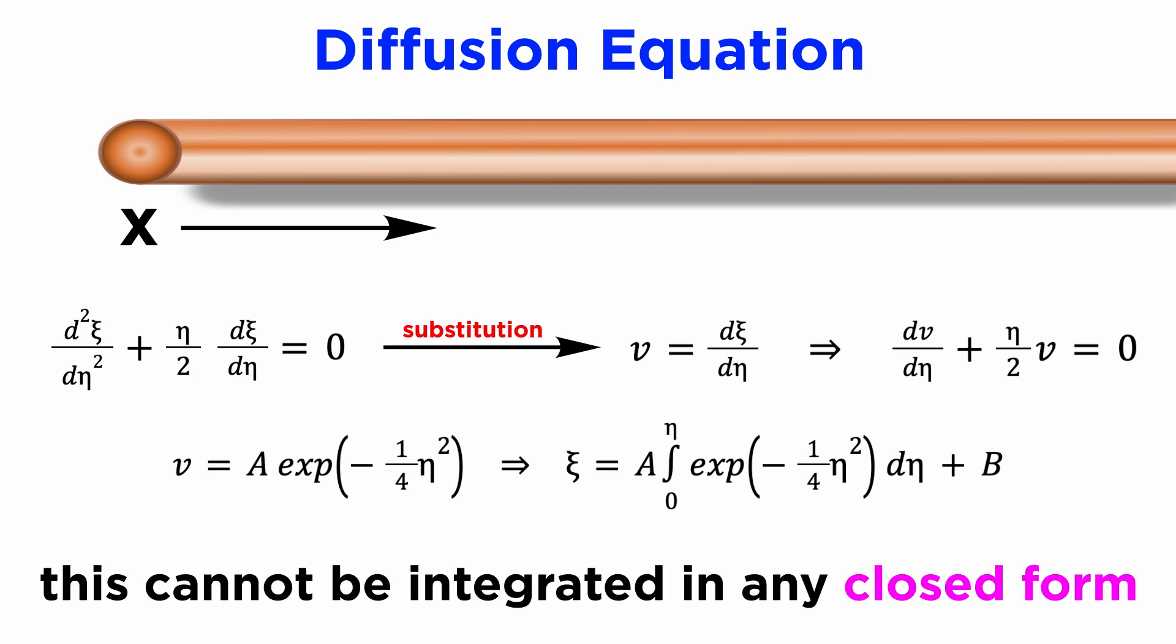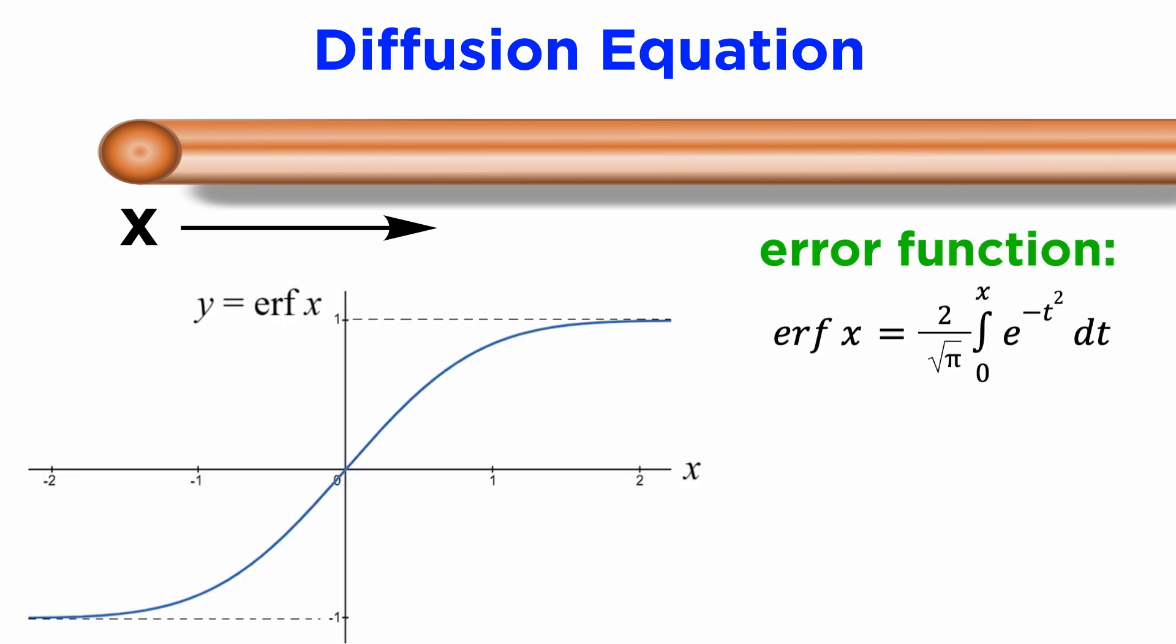Integrating this to undo the substitution would give xi, but functions of the form e to the x squared cannot be integrated in any closed form, and we need to use a special function called the error function, denoted erf of x, which is defined as two over square root of pi, times the integral from zero to x of e to the negative t squared dt. We can therefore write our dimensionless solution as xi equals a times the error function of eta over two plus b, from which we could easily get our general solution for u in terms of x and t.